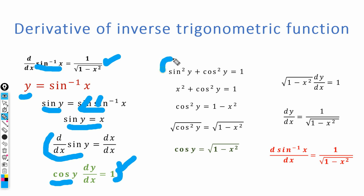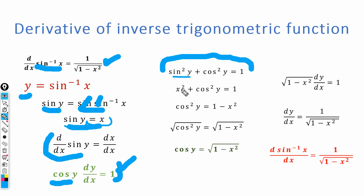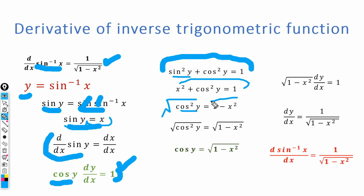Now according to the trigonometric identity, sine squared y plus cos squared y is equal to 1, and we know that sine y is equal to x. Substituting sine y with x, we have x squared plus cos squared y is equal to 1. Rearranging, cos squared y is equal to 1 minus x squared. Taking the square root on both sides, cos y is equal to the square root of 1 minus x squared.